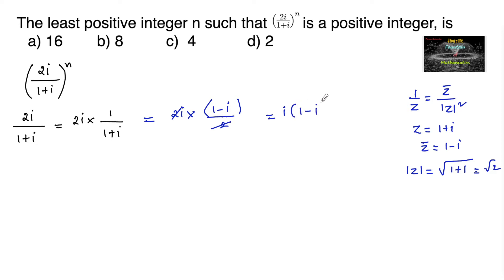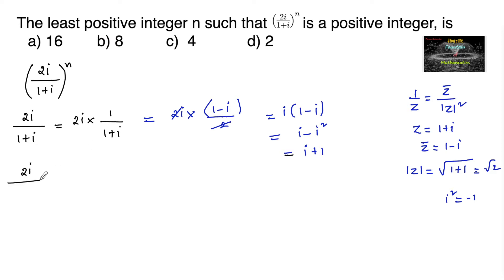This equals i(1−i) = i − i² = i + 1, since i² = −1. So 2i/(1+i) = 1+i. We require the least positive integer n such that (2i/(1+i))^n, which is (1+i)^n, must be a positive integer.